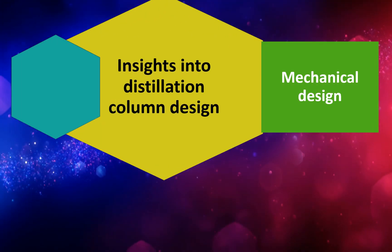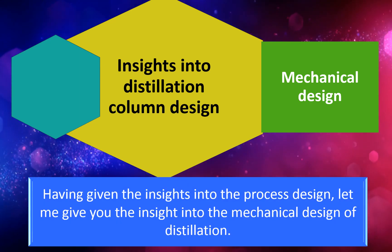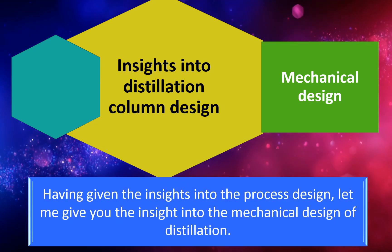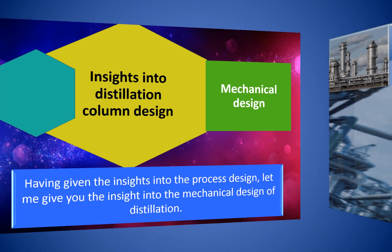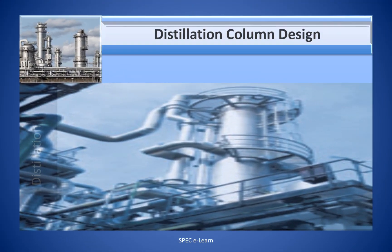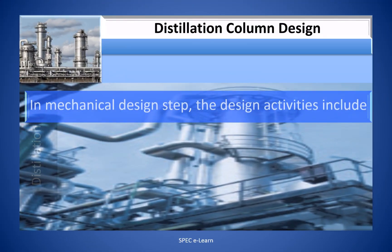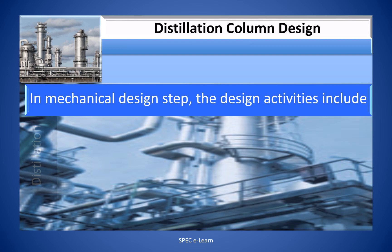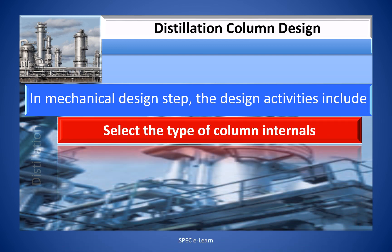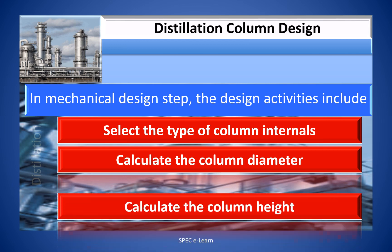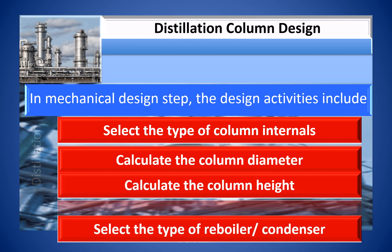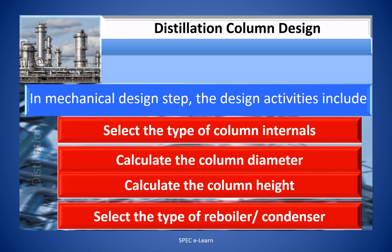Mechanical design of distillation column. Having given the insights into the process design, let me give you the insights into the mechanical design of the distillation column. In the mechanical design step, the design activities include: select the type of column internals, calculate the column diameter, calculate the column height, and select the type of reboiler and condenser.